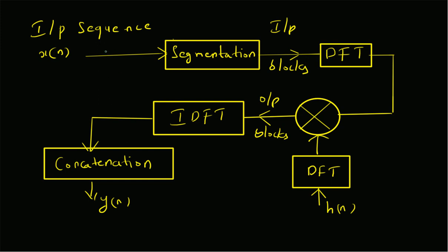This filtering of long data sequences can be summarized by a block diagram. We have the input sequence x(n), we apply segmentation to get input blocks, then apply DFT to get the DFTs of the input blocks. We multiply these DFTs with H(k) — the DFT of the impulse response h(n). Multiplying H(k) with X_m(k), the DFT of the m-th block, gives Y_m(k), the m-th block of the output in frequency domain. We then apply IDFT to get y_m(n), the output blocks in time domain.